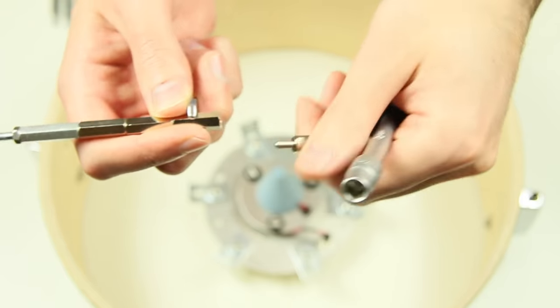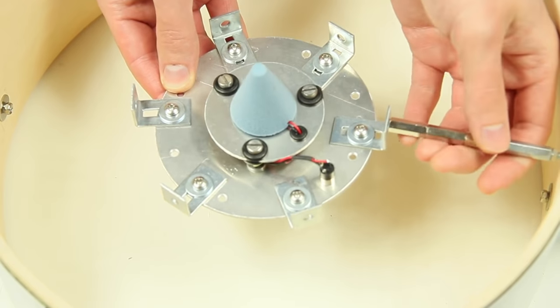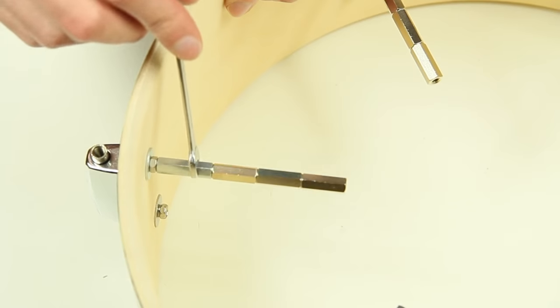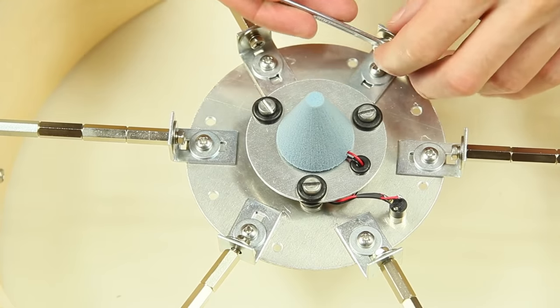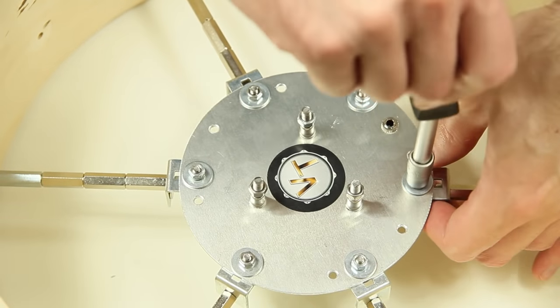Now we want to apply it in a snare shell. We follow the same steps. Only the counter-nuts are on the bottom side to be able to lower the head trigger.